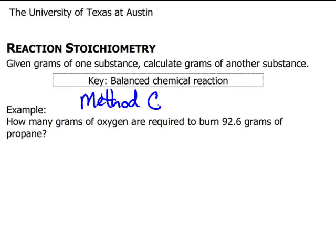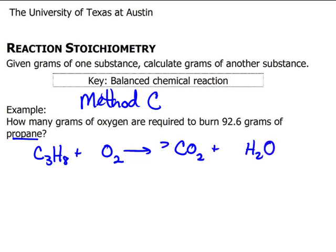So we've already, in the other videos, looked at how to write the balanced chemical reaction for propane burning in air. Propane is C3H8 plus O2 gives CO2 plus H2O. We're going to be very good at balancing this equation by the end of these three videos.